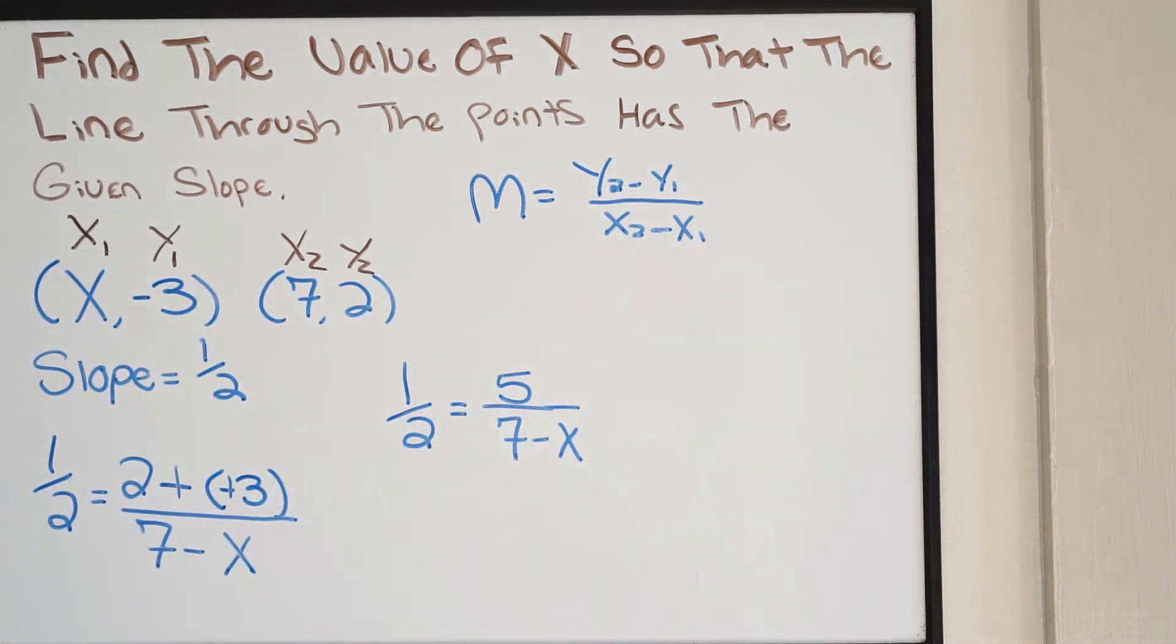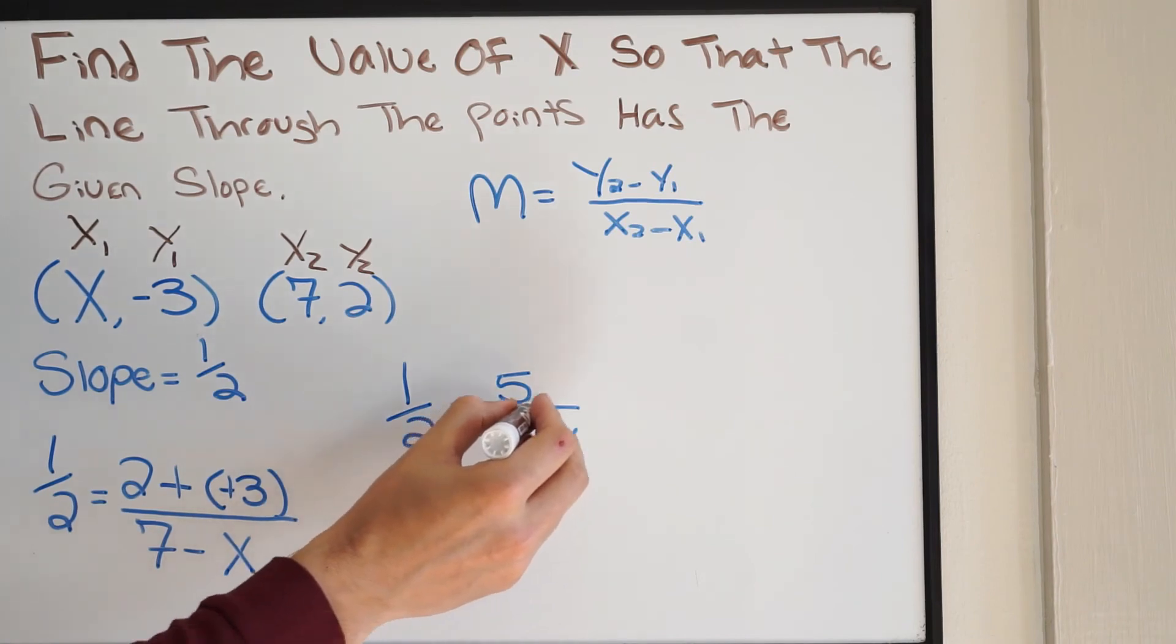So look what we have here. We have two fractions that are equal to each other. This is a proportion. And when we're given a proportion, we can solve it by using cross multiplication. So what I'm going to do here is I'm simply just going to cross multiply.